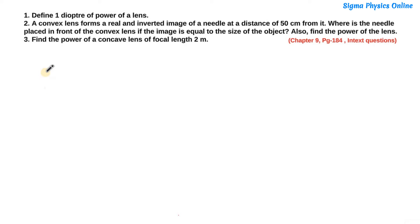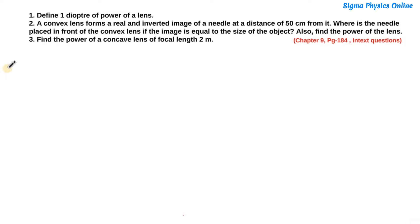Hello students, welcome back. Let's have a look at the next set of questions. The first question is: define one diopter of power of a lens. Second: a convex lens forms a real and inverted image of a needle at a distance of 50 centimeters from it — where is the needle placed in front of the convex lens if the image is equal to the size of the object? Also find the power of the lens. Third question: find the power of a concave lens of focal length 2 meters.